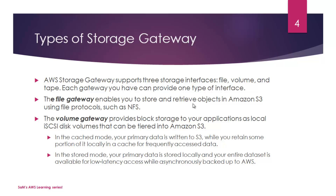File Gateway is the first type. It enables you to store and retrieve objects in Amazon S3 using file protocols such as NFS — Network File System. Using these protocols, object storage and retrieval is possible in Amazon S3. If you are looking to store flat files in S3, File Gateway is the best solution for that purpose.